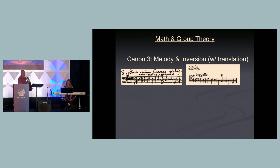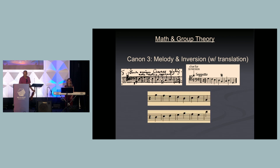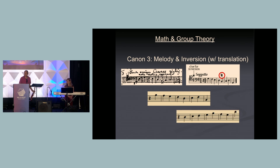Here's the third Canon, and this one introduces another element. There's an inversion — the only reason you know it's an inversion is because in that particular clef, the note has to be an F sharp, and the only way to read it as an F sharp is to invert. There's also a little symbol — a dal segno in music — indicating that one of the parts has to start a little bit later.